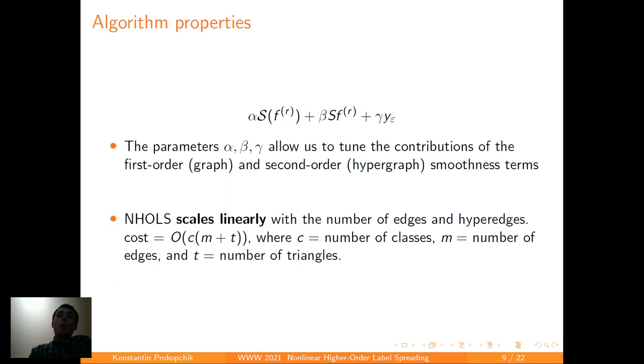As you can see, we have now iterations with three parameters alpha, beta, and gamma. Each of them allow us to tune the contributions of each of these terms, which allows us to choose the amount of data we want to use for any given data set. You also can notice that NHLS scales linearly with the number of edges and hyperedges, which means that with the increase of the size of the data set, the time complexity will not grow that fast.